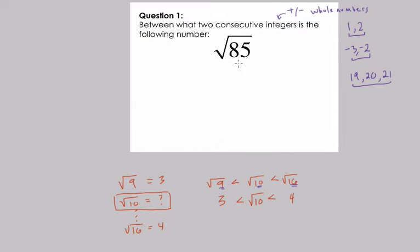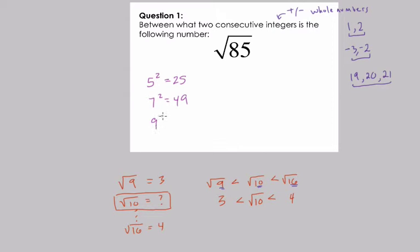Now, for the square root of 85, how would you go about solving this? Well, I might just start using integers and squaring them. So I might take the number 5 and square it — I get 25, a perfect square, but that's way too small. So I jump up to 7: 7 squared is 49, still too small. Let's try 9 squared — that's 81. So now we know that the square root of 81, which is a little bit smaller than the square root of 85, is right below the square root of 85 and equals 9.